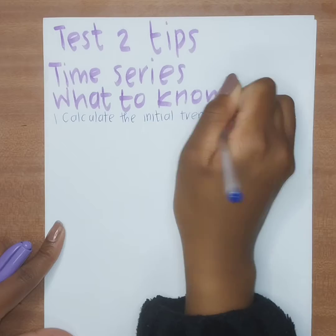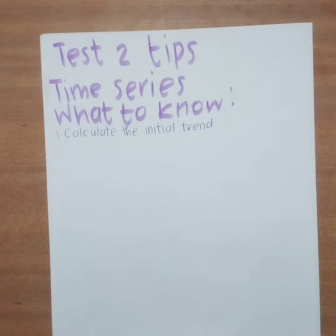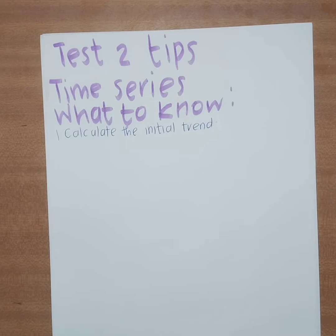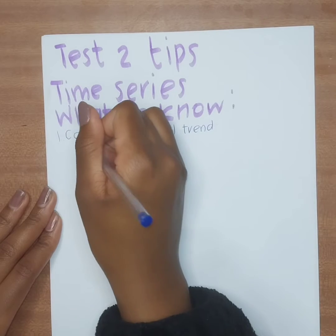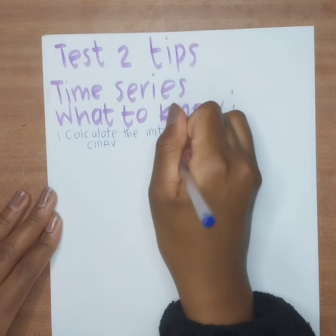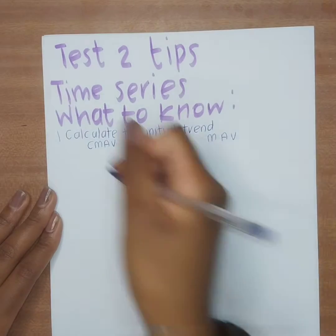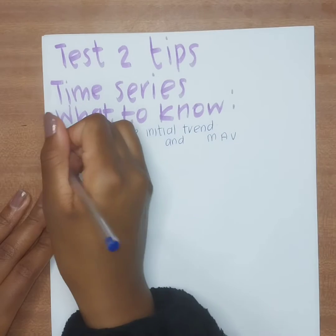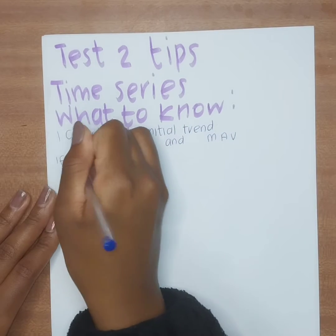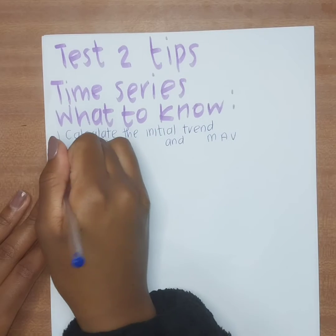You need to know how to calculate the initial trend. When I say 'know the initial trend,' I mean know how to calculate your CMAV and your MAV. You calculate the CMAV when your p is even.